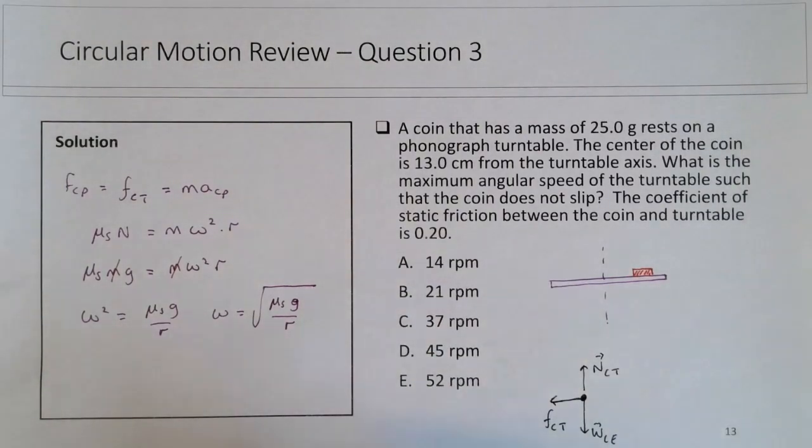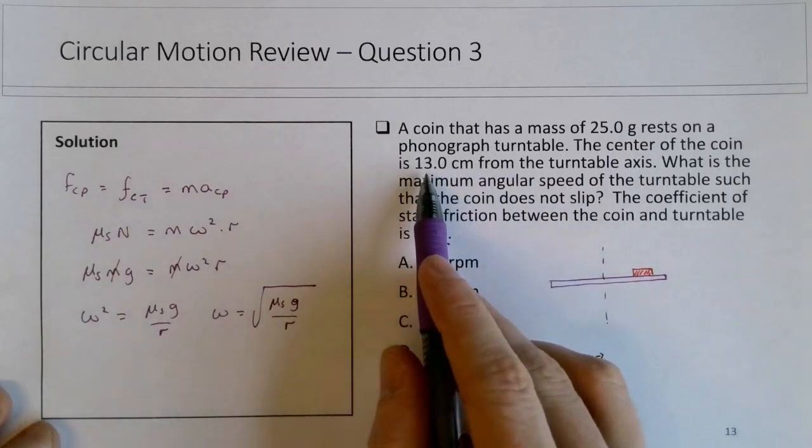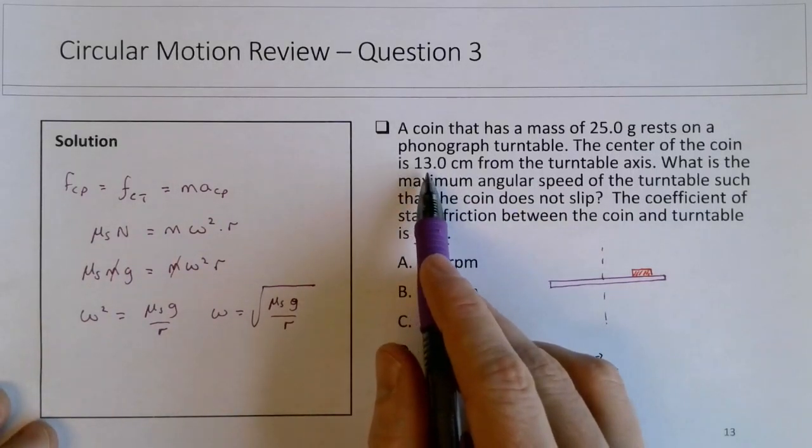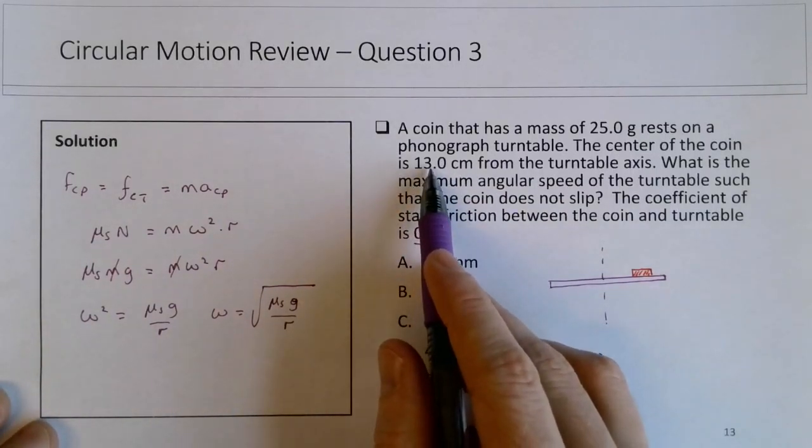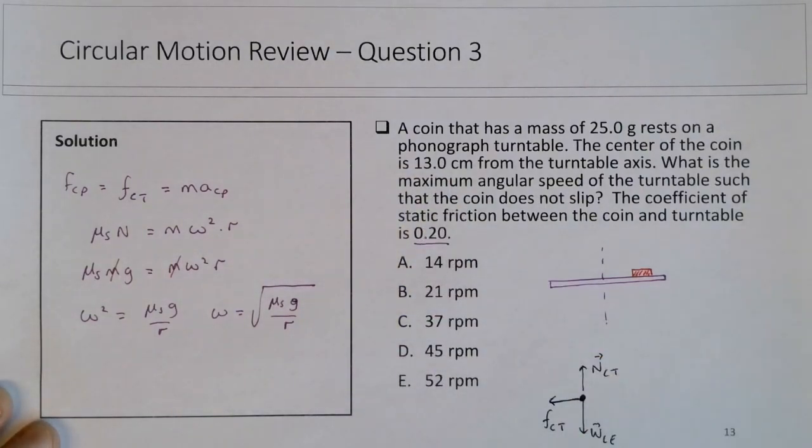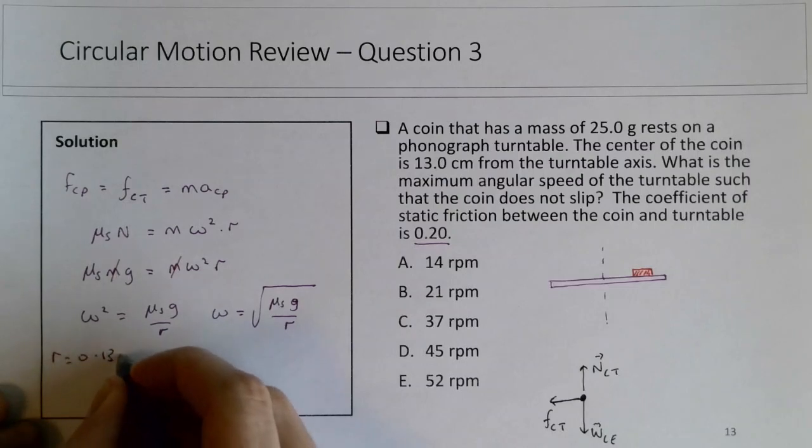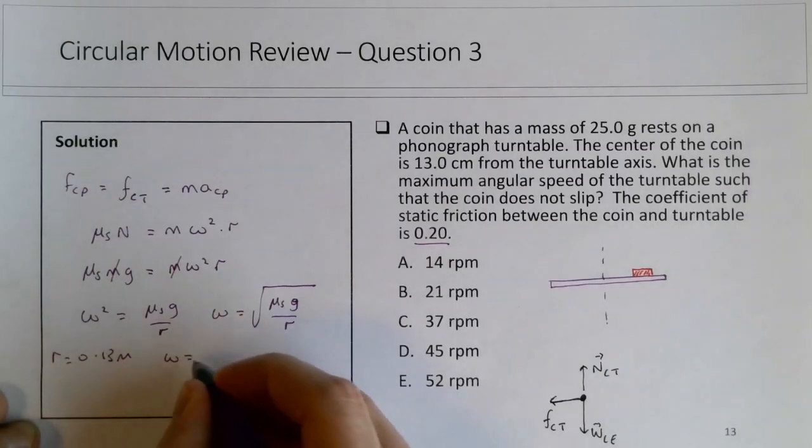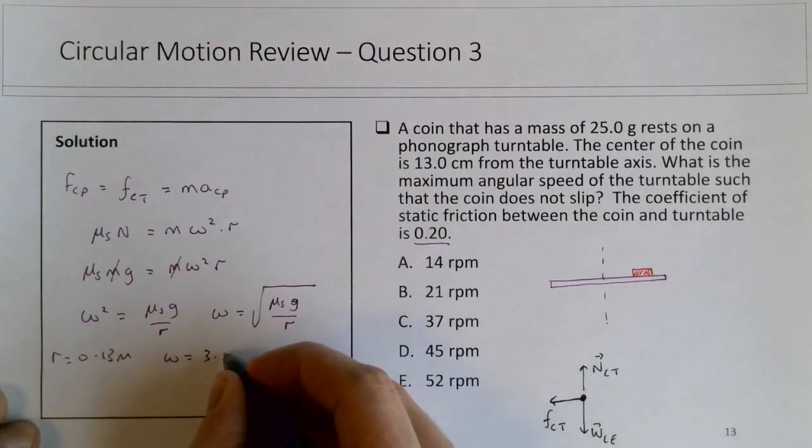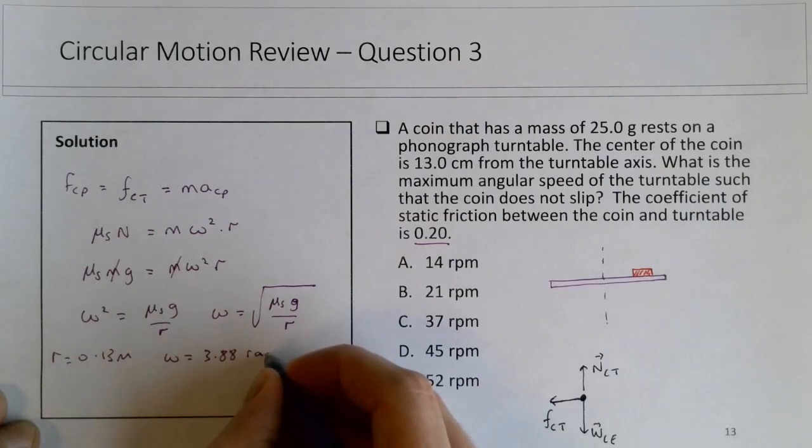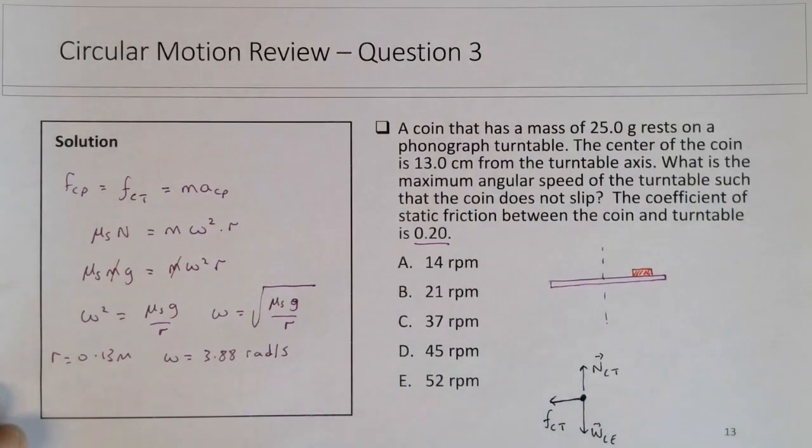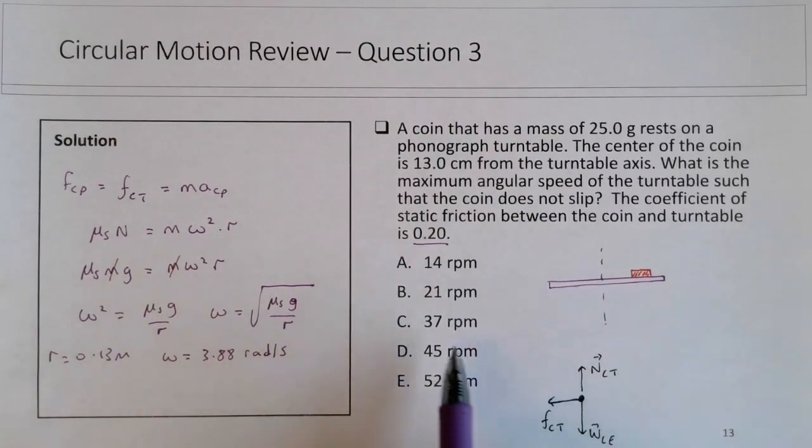So in this example, we do have mu_s, we have the R, but the R needs to be converted to meters. Let's check my calculations here. If you solve for this where R is equal to 0.13 meters, omega is equivalent to 3.88 radians per second, but that's not in the units that we need that these choices are given in.